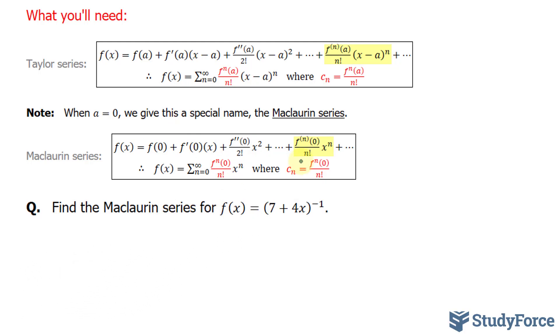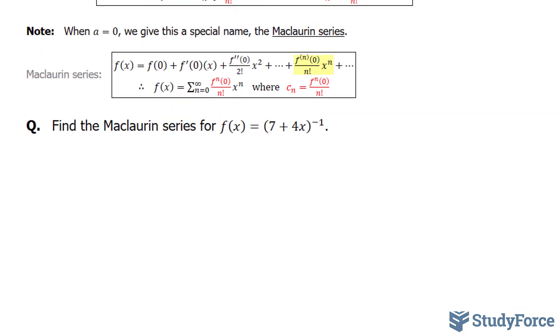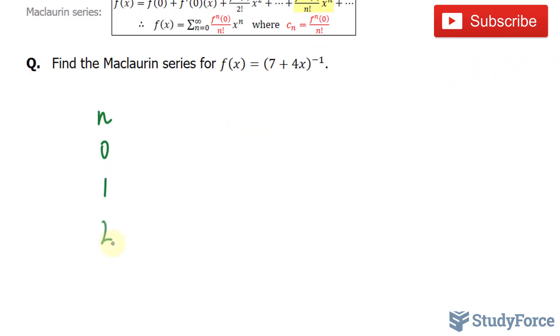So to organize my work, I will be creating a table. And n will represent the number of terms, so zero is the first term, one is the second term, two, three. In the next column of my table, I will write down f^(n) at x.